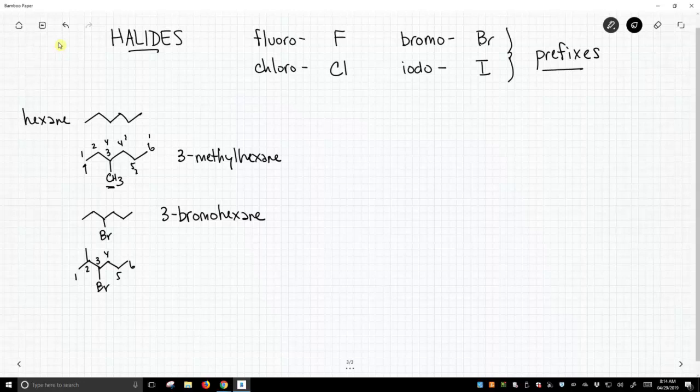And now we simply list our substituents in alphabetical order. So the bromine, bromo comes first, and it's at the 3 position, 2-bromo-3-methylhexane.